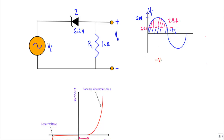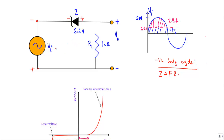Now consider the negative half cycle of the applied voltage. During the negative half cycle, this terminal will be at lower potential and this terminal at higher potential, so the positive terminal will be connected with the p-side and the negative terminal with the n-side of the Zener diode. Therefore, during the negative half cycle, the Zener diode should be in forward bias. From the IV characteristics, as long as the applied forward voltage is less than the built-in potential of 0.7V, the Zener diode will not conduct.